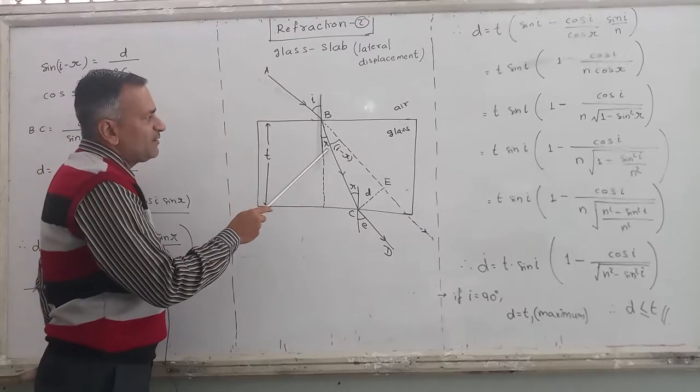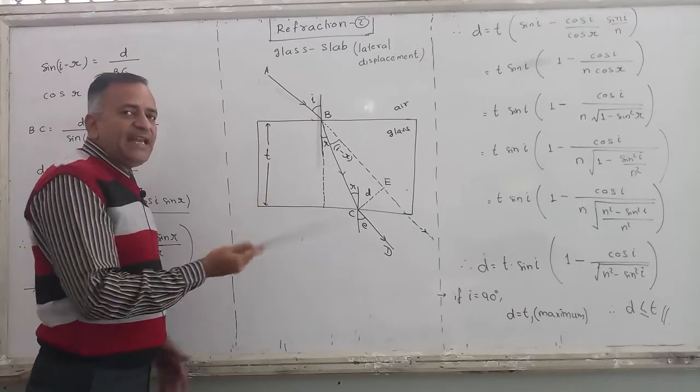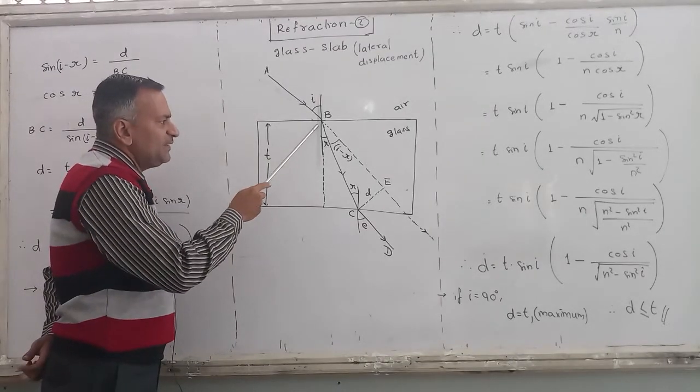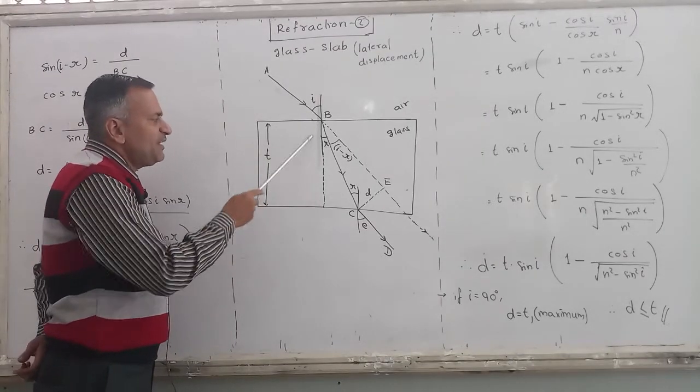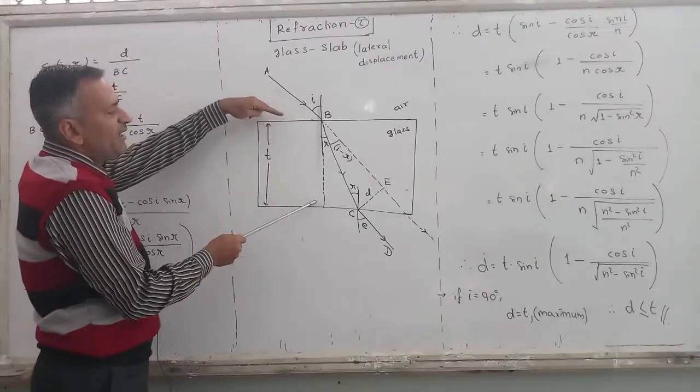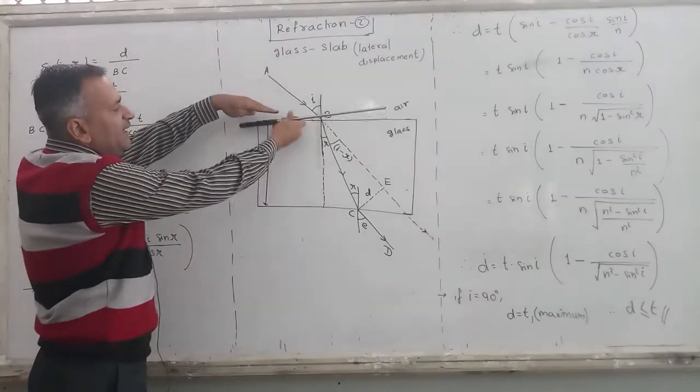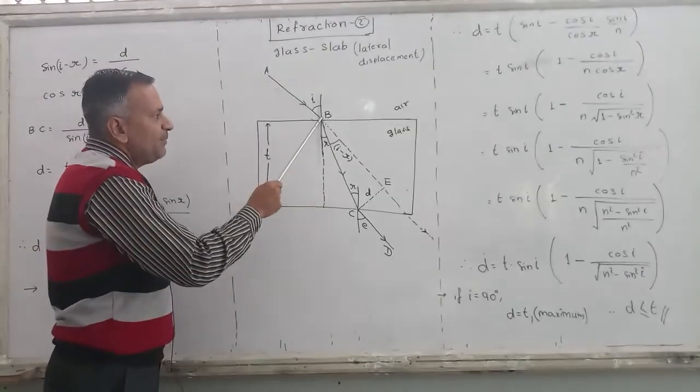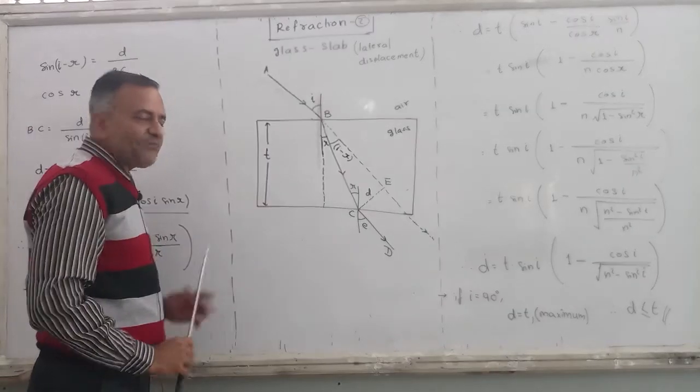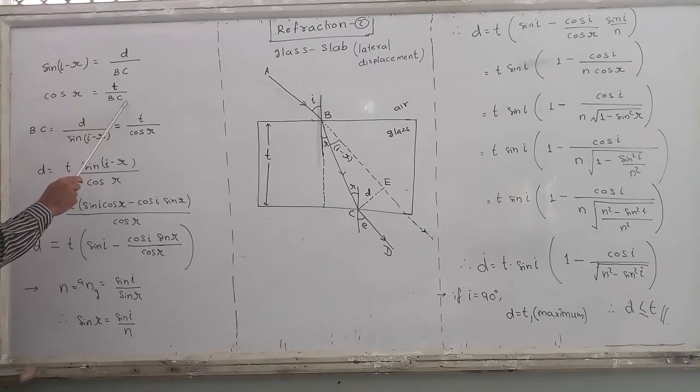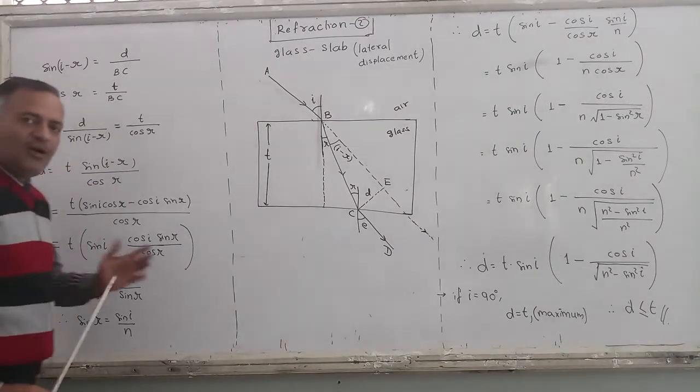Now find cosine of this. Cosine is adjacent side upon hypotenuse. So for this angle, this side which is equal to the thickness of glass slab - adjacent side upon hypotenuse. What is hypotenuse? BC. So what is cos R? Cos R equals T upon BC.